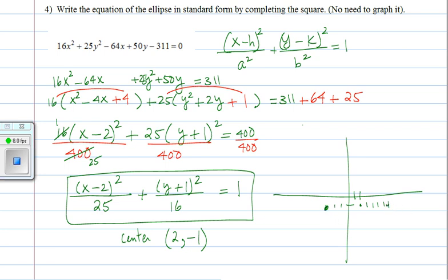Those are the major vertices because 25 is bigger than 16. When you go in the y direction, you go 4 units up and down. Because 4 and 5 are such close numbers, this looks almost circular. But a circle is actually a special ellipse — and this is not a circle, it's an ellipse.